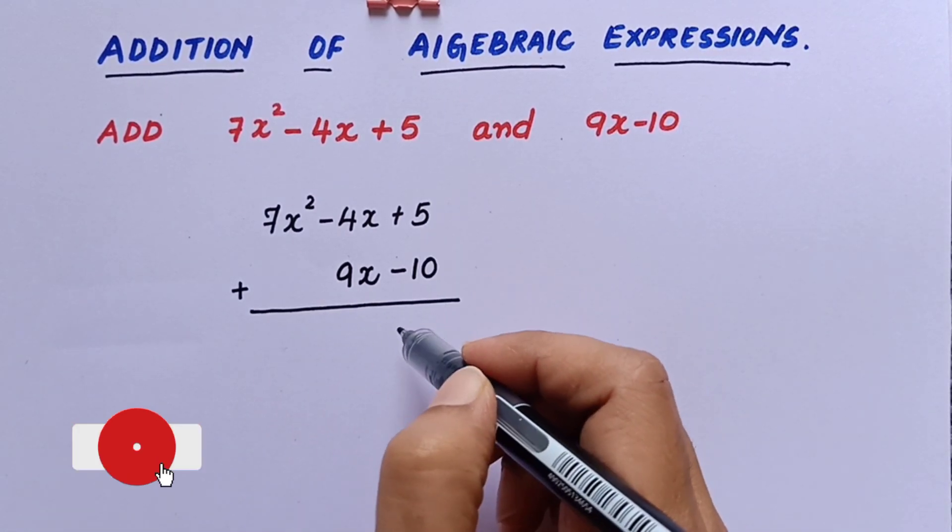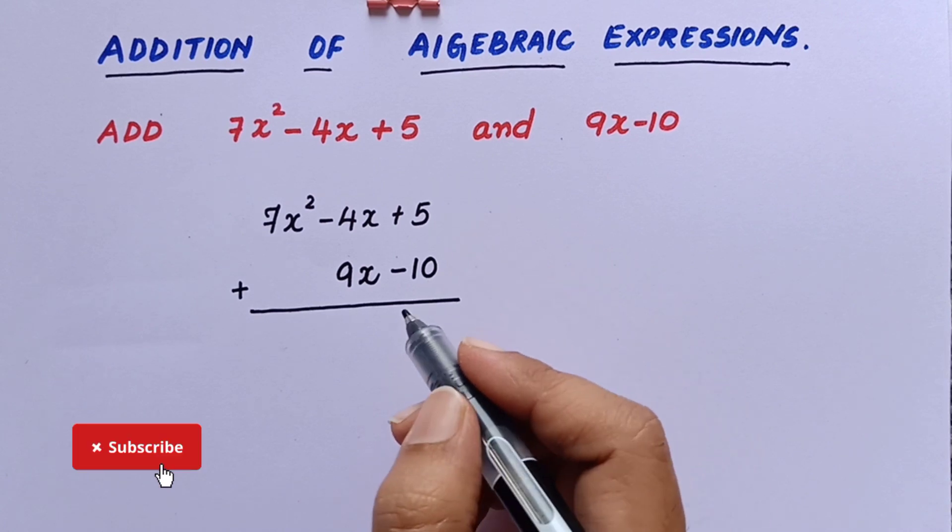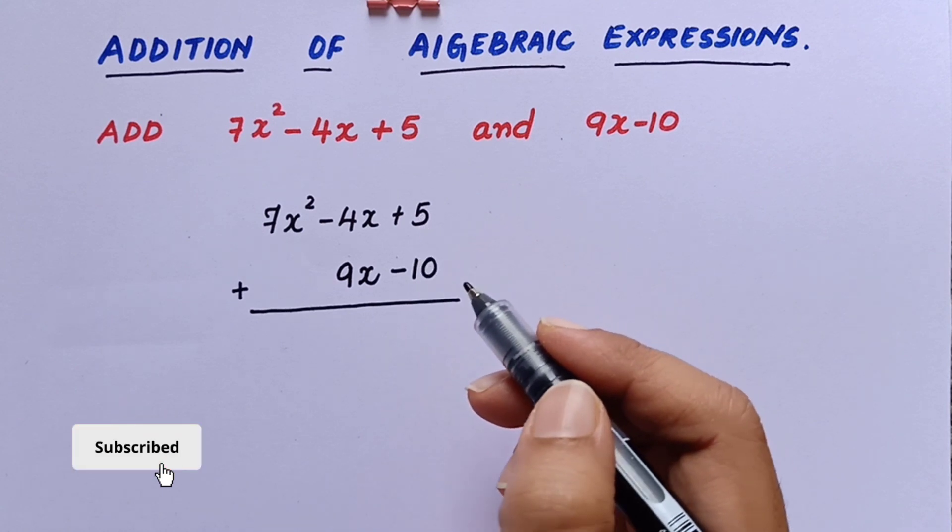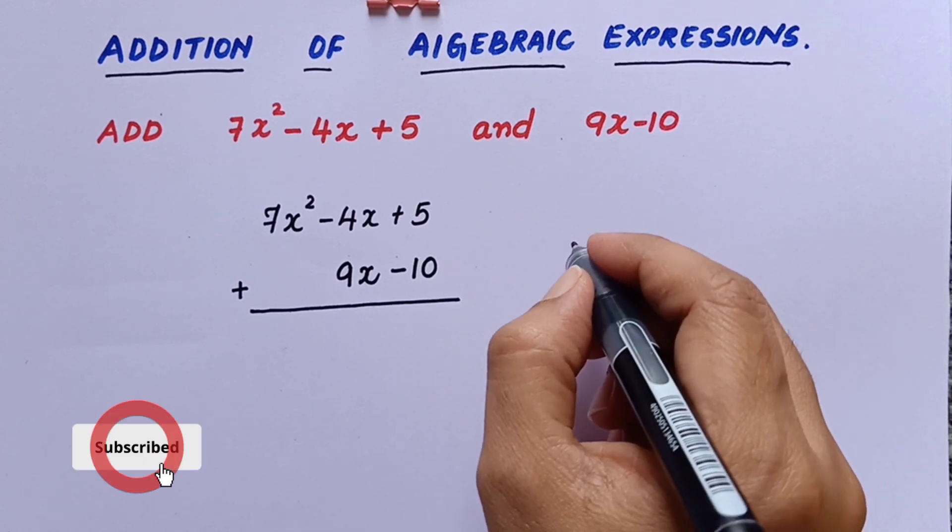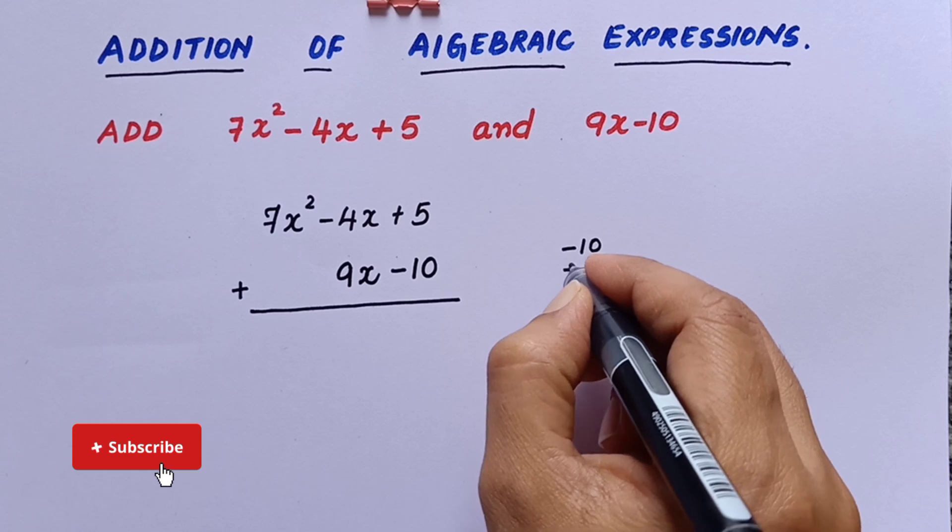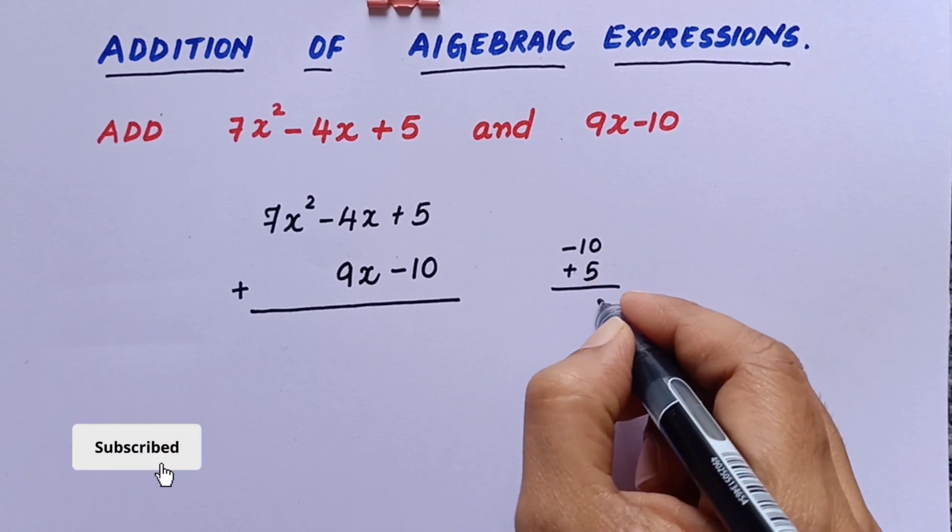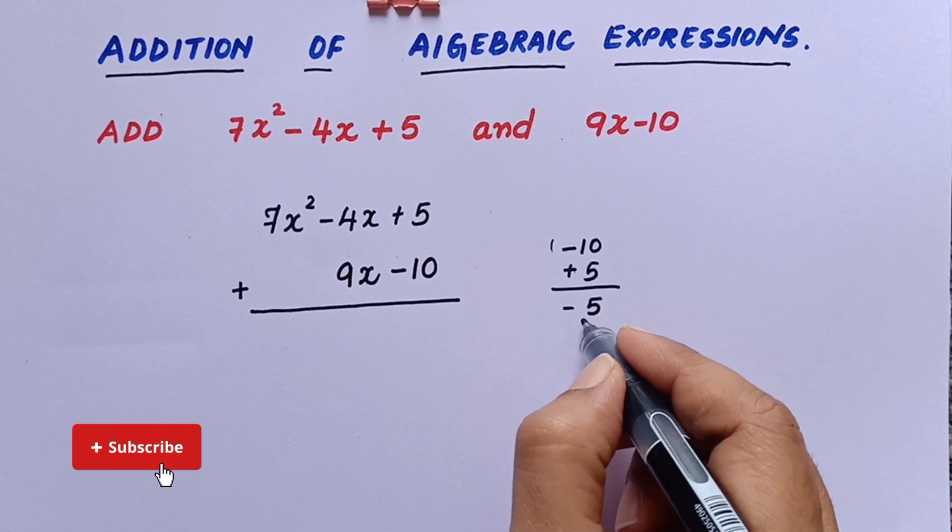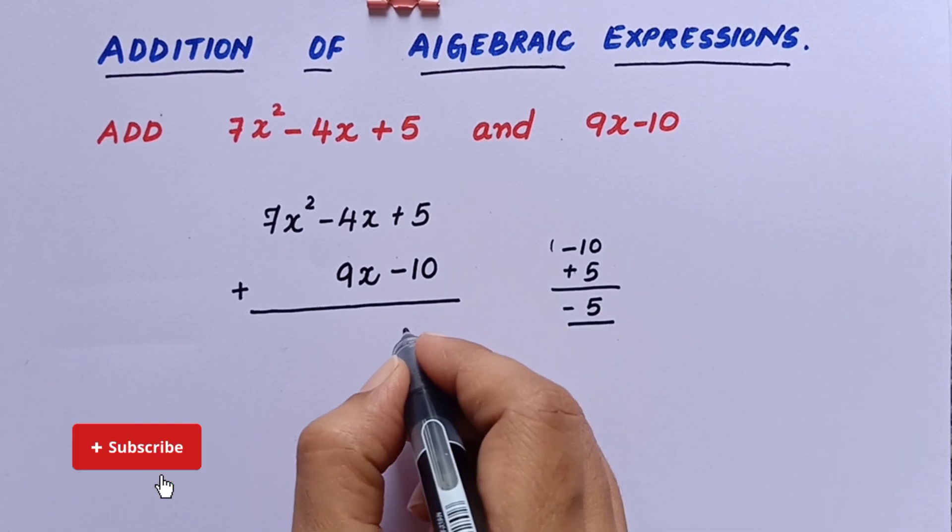So first we'll add 5 and -10. So we get here +5 - 10 is we get +5 or -5. So the greater number sign is minus here.